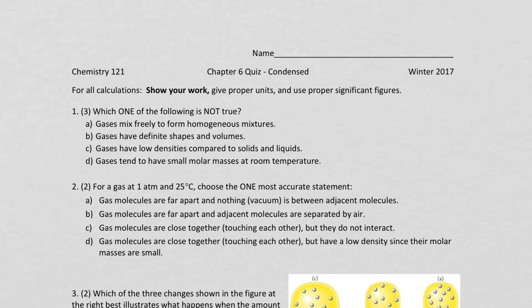Question 1 says, which one of the following is not true? That's a really good word to look at. Not is a good idea. So A, gases mix freely to form homogeneous mixtures. We actually know that that is true because gases have indefinite shape and indefinite volume, so they can mix freely.